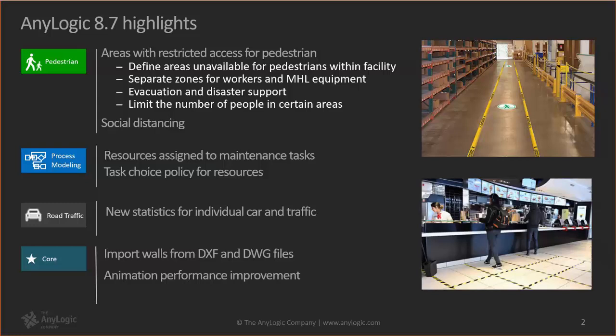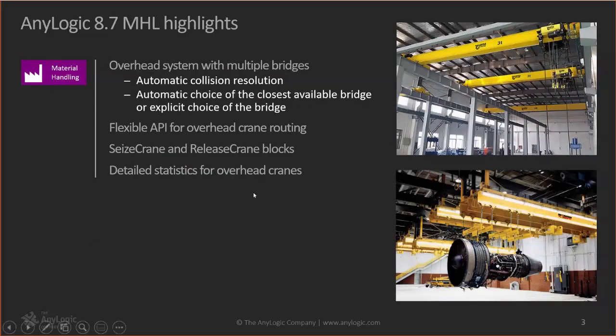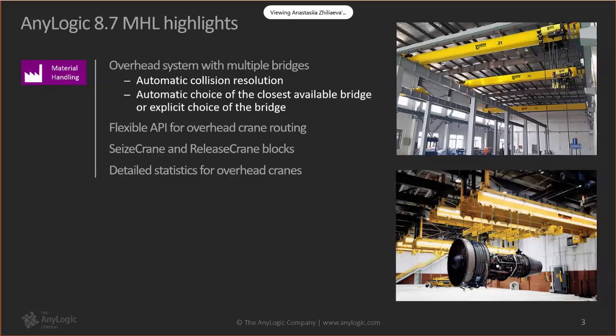I'll be talking about overhead multi-bridge cranes. As you may know, the previous AnyLogic version already had an overhead crane, but it was limited to a maximum of one bridge. To implement multi-bridge cranes you had to drag several overhead cranes into one spot so they would overlap, but the problem with this method is that different bridges from different cranes didn't know about each other, so collision detection was impossible. In the latest version we upgraded overhead cranes to support more than one bridge — you can have as many as you want.